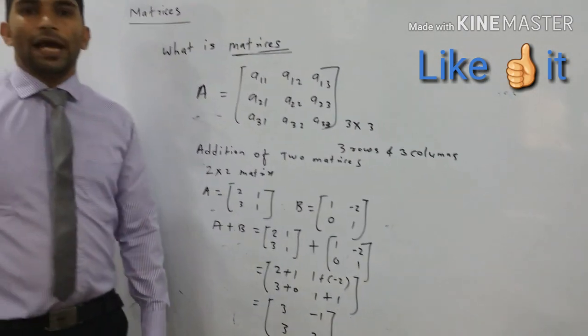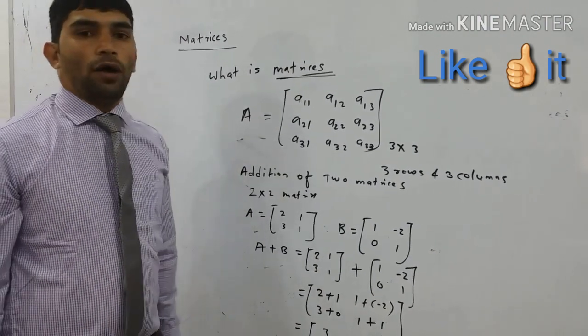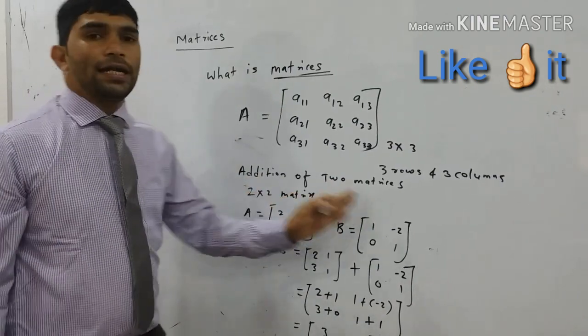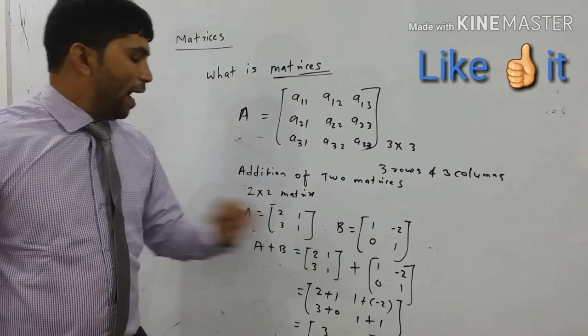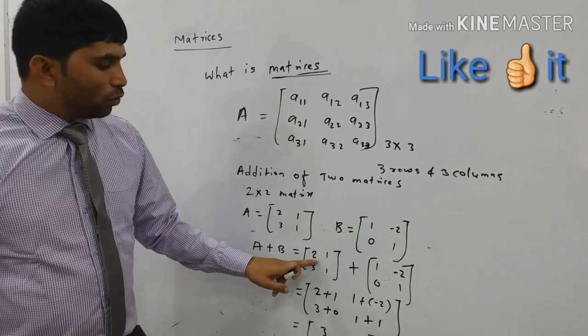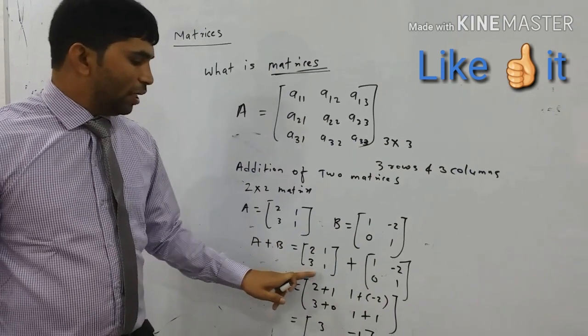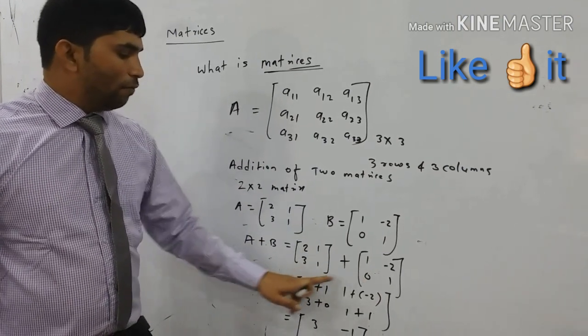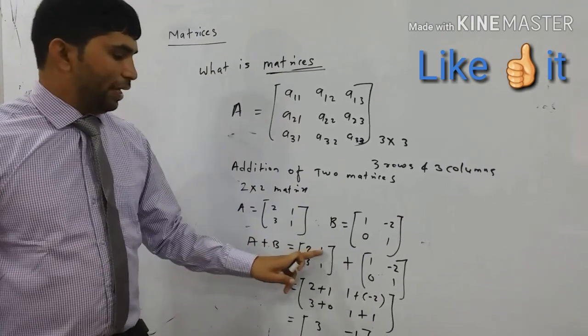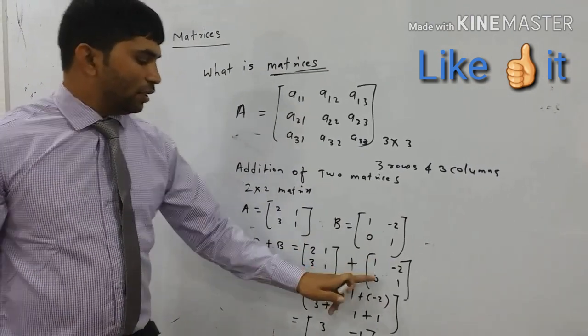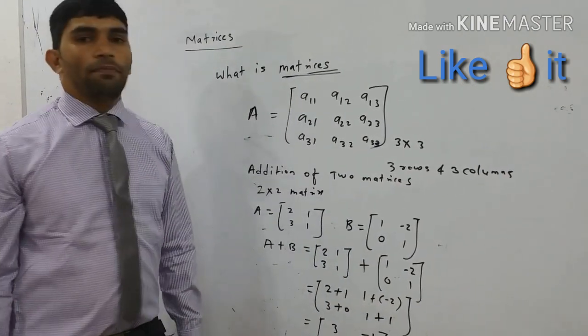Here we learn today what is matrices and denoted by what. And next, we learn addition of 2 matrices. That is 2 by 2 matrix A and B. We add 2 with 1, 1 with minus 2, 3 with plus 0 and 1 with 1 position wise. First position with first, second with second, third with third and fourth with fourth. So we learn addition of matrices.